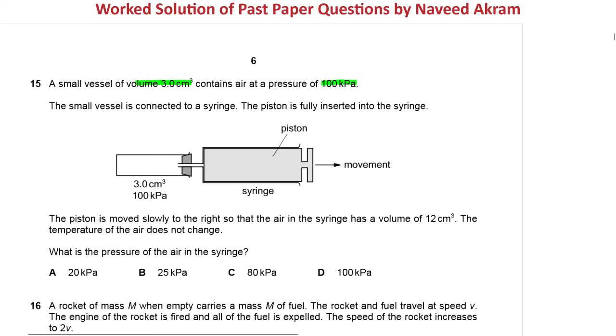The small vessel is connected to a syringe. The piston is fully inserted into the syringe. The piston is moved slowly to the right so that the air in the syringe has a volume of 12 cubic centimeter.